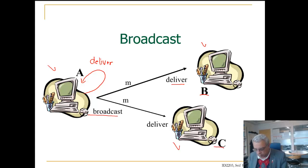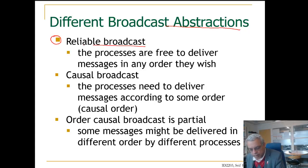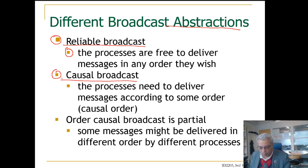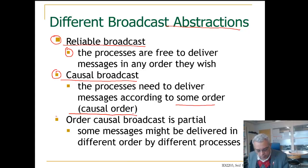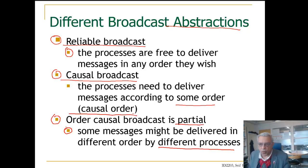We had different types of broadcast abstractions studied in this course. One is reliable broadcast, where processes are free to deliver messages in any order, but messages are delivered reliably — if a node delivers a message, every other correct node will also deliver it. Then we had causal order broadcast, where processes deliver messages in a specific causal order. Causal order broadcast is partial in the sense that some messages may be delivered in different orders at different processes; if two messages are not causally related, they could be delivered in arbitrary order at different processes.